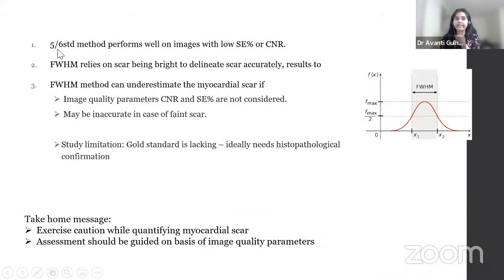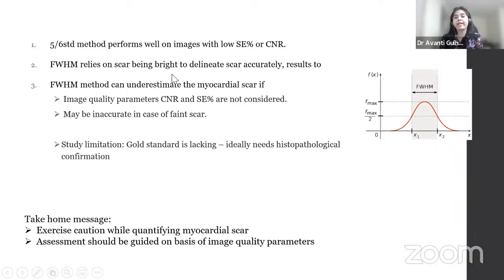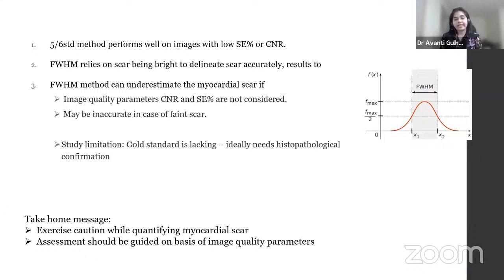In summary, 5 to 6 SD methods perform well when images have low signal enhancement percent or contrast-to-noise ratio. Full width at half maximum works best when the scar is bright and can accurately delineate scar in such patients, but may underestimate scar if image quality parameters are not considered and may be inaccurate for faint scar. The key limitation across the literature is the lack of a gold standard — no histopathological confirmation exists for the CMR-quantified fibrosis amounts. Assessment should always be guided by image quality parameters.